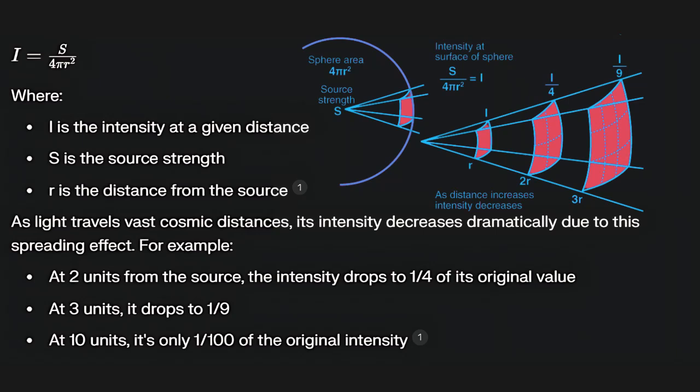Mathematically it'd be like I equals S over 4πr², where I is the intensity of light at a given distance, S is the source strength, and r is the distance from the source. As light travels, even in the heliocentric model, vast cosmic distances, its intensity decreases dramatically due to this spreading out effect.